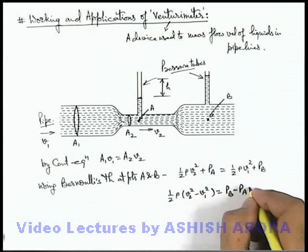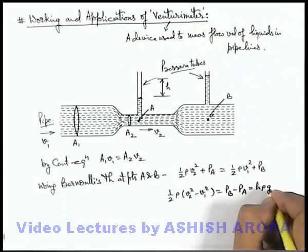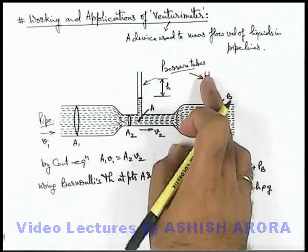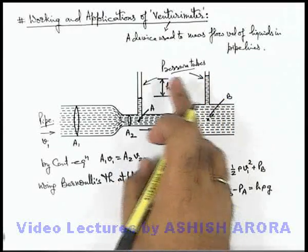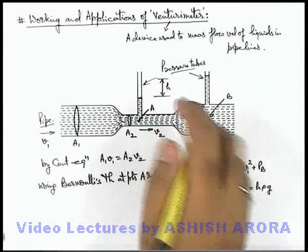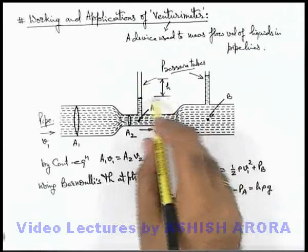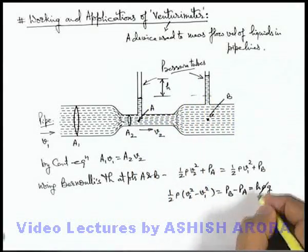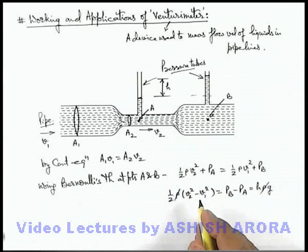And the pressure difference can directly be written as h ρ g because this pressure is responsible for rise in level of liquid in pressure tubes. And if the difference is h, then pressure at point B and A is due to this extra h height of liquid column. Here ρ gets cancelled out.